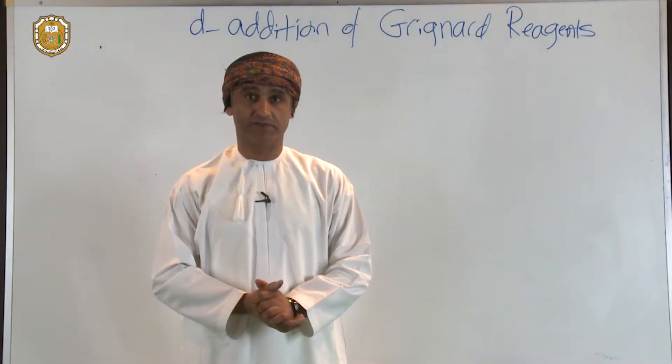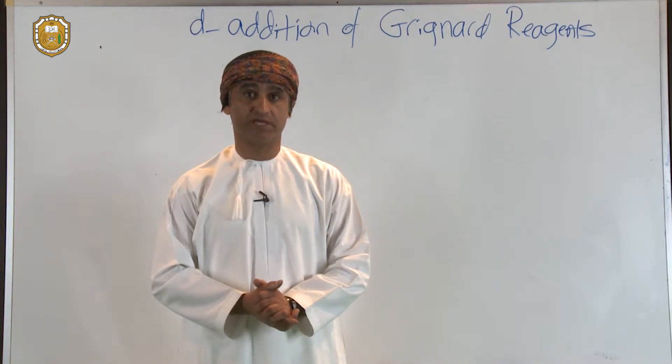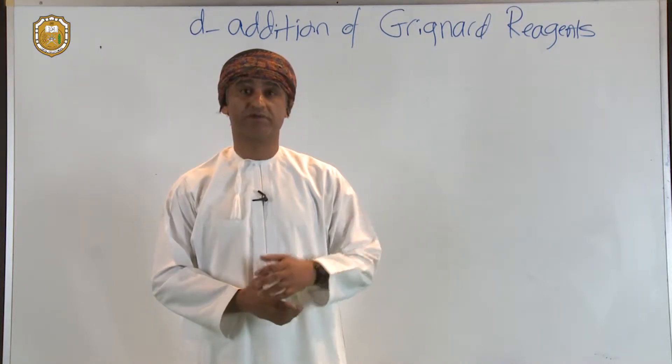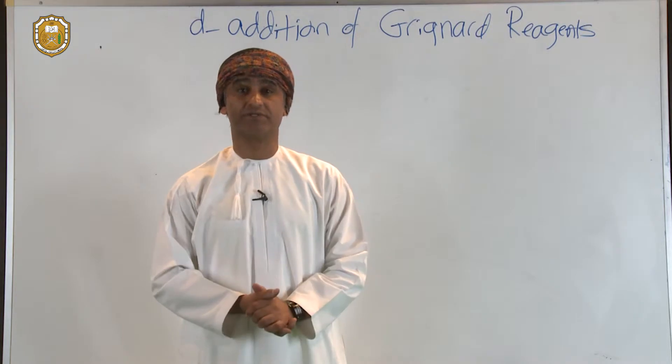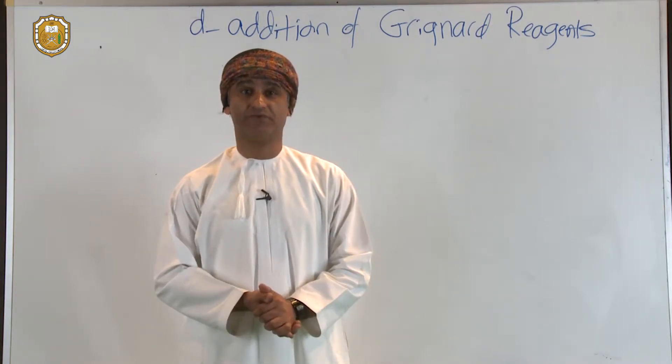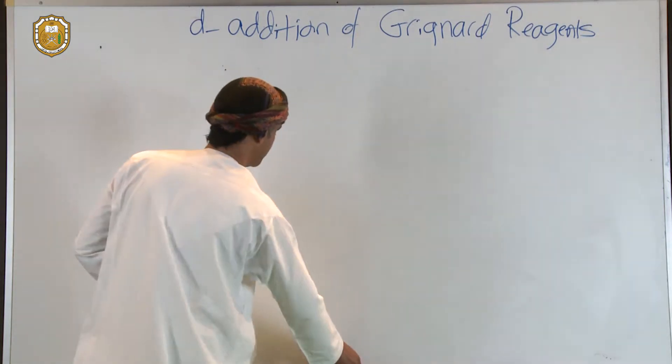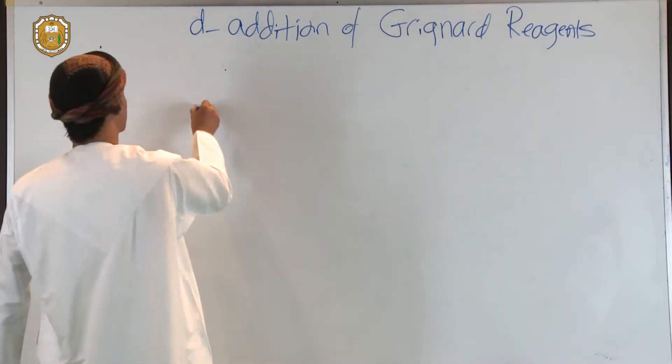Grignard reagents do not only react with aldehydes to give the corresponding secondary alcohols. Grignards also react with ketones, and Grignards also react with formaldehyde. So let's draw general representations of these reactions.